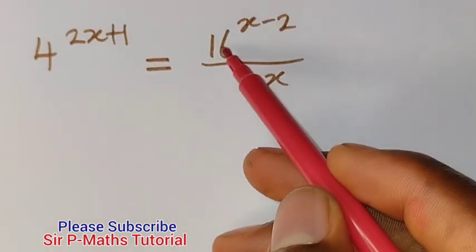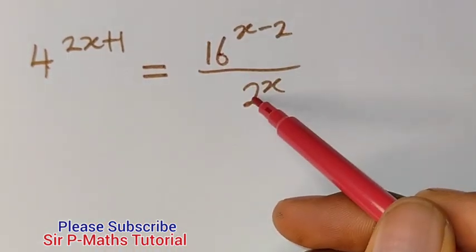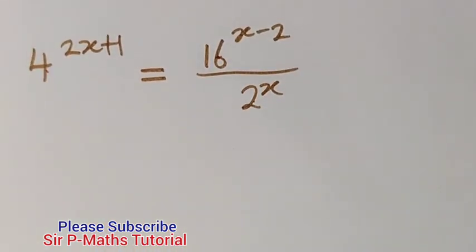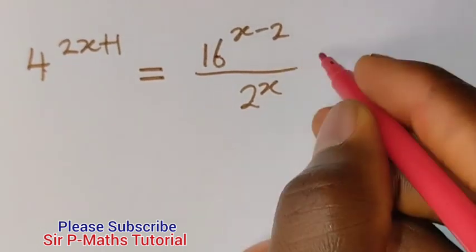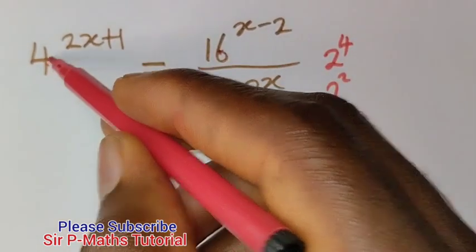Alright, the first thing I will do is to reduce 4 and 16 to the base of 2 since I have 2 as my denominator here. I mean writing it as index 2 raised to power 4 will give me 16. 2 raised to power 2 will give me 4.